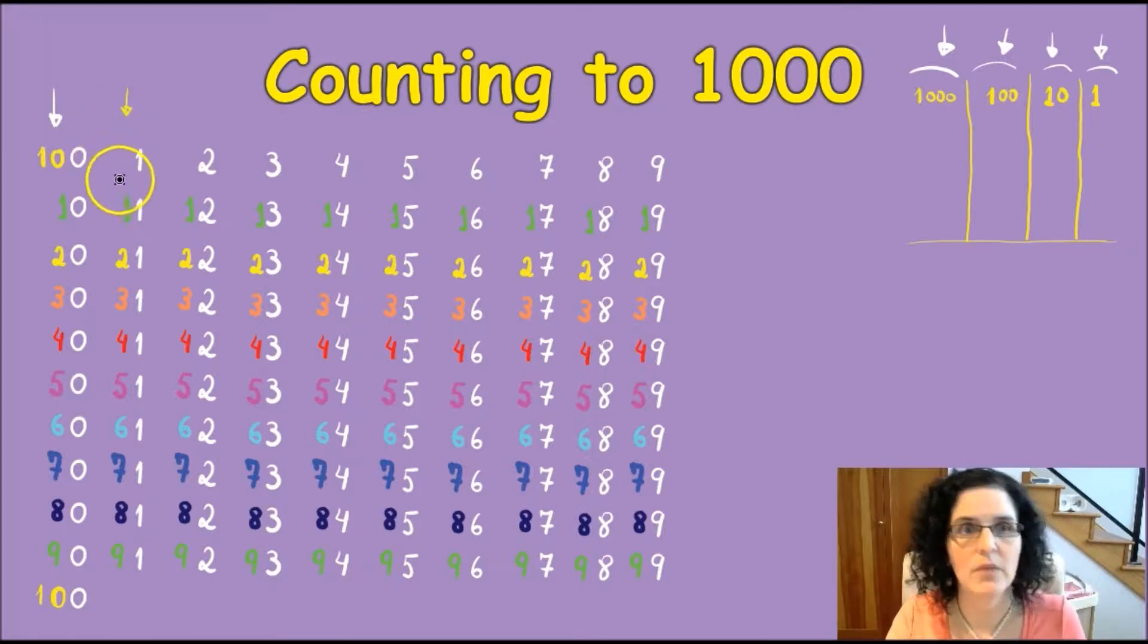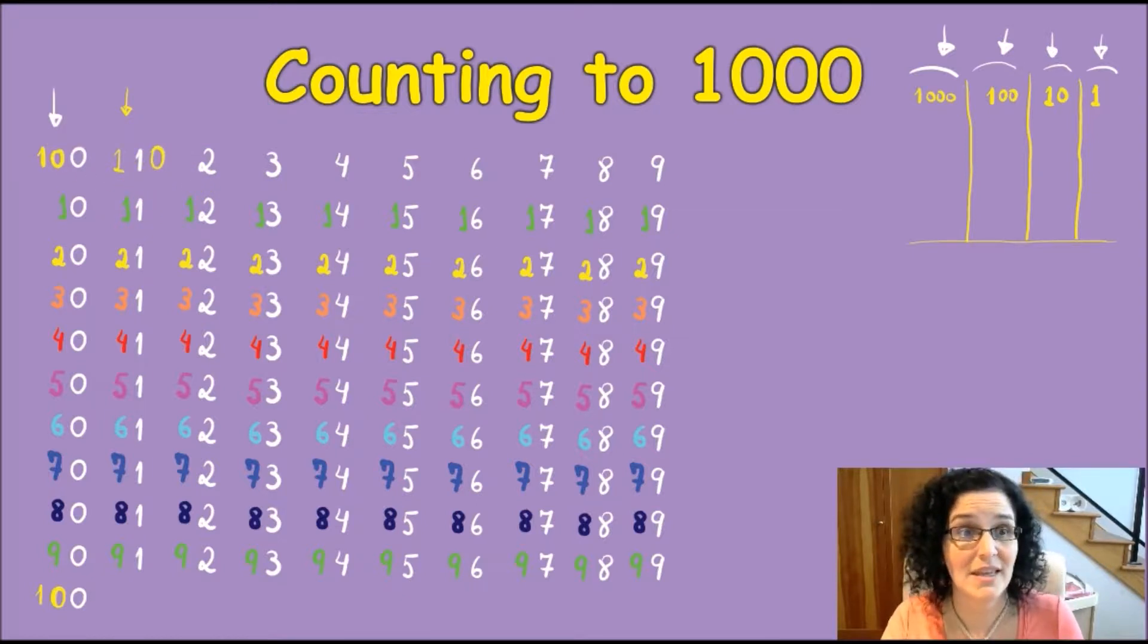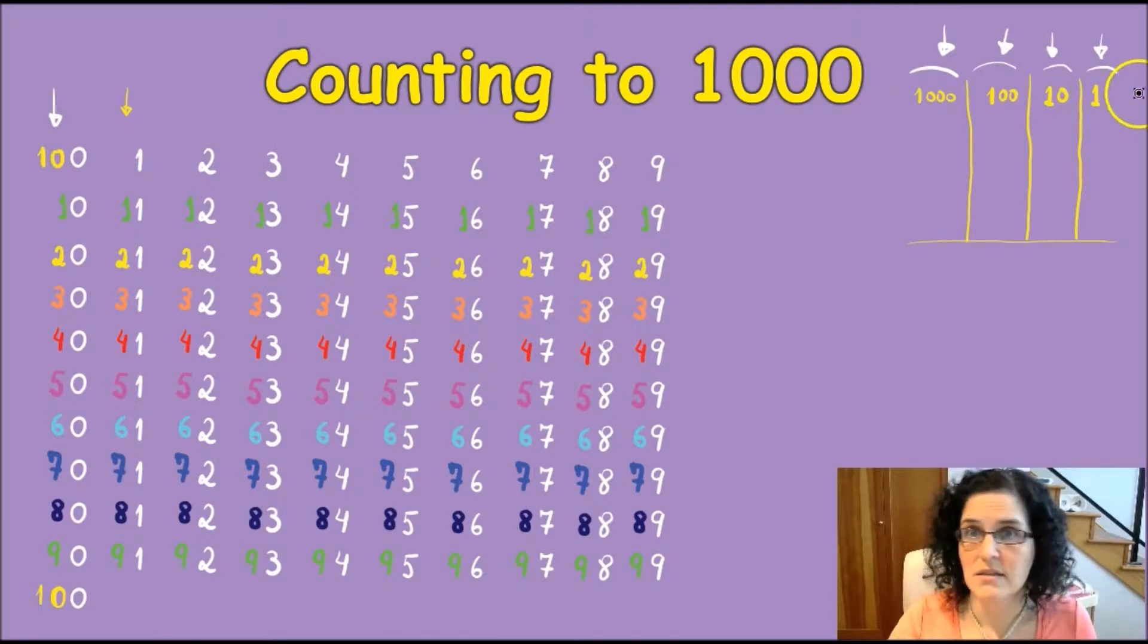So what I see a lot when it gets to writing 101, 102, 103 is this, because it makes sense when you're adding a one there. But wait, what you did here is you skipped 10 different digits.